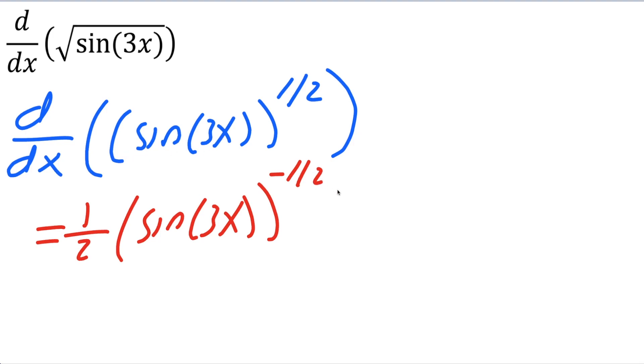Now we need to take the derivative of sine, and the derivative of sine would be cosine. Then again, we copy the inside piece, we don't make a change. And now we need to take the derivative of 3x, and the derivative of 3x would be 3.